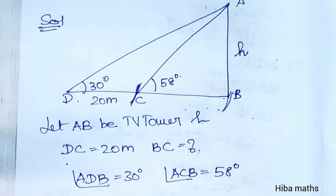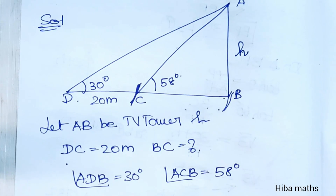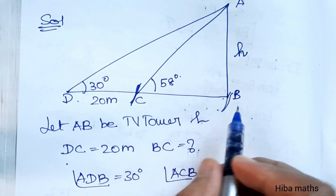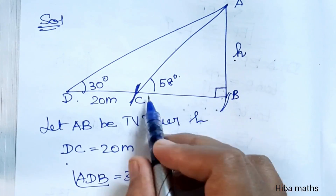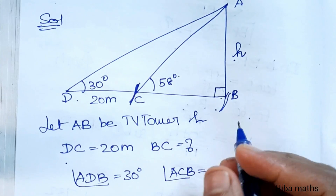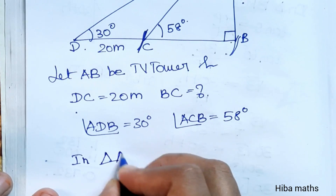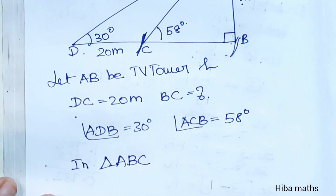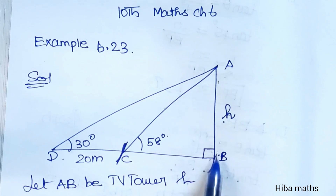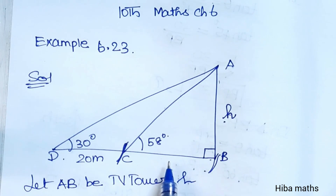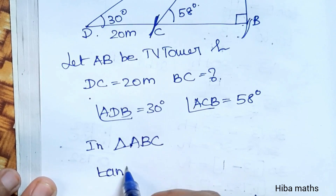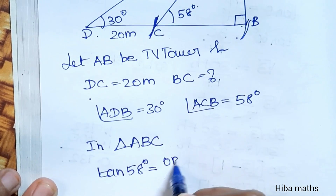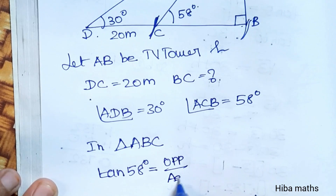We will use tan theta. First, consider triangle ABC — this is a right-angle triangle. The opposite side is the height AB, and the adjacent side is BC. The angle at C is 58 degrees. The opposite side is known as AB and the adjacent is BC.